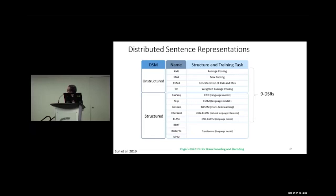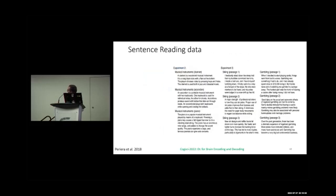They also extended the work by adding BERT representations. The data used was from experiments two and three — passage reading — since experiment one is mainly concept-level. Five subjects read 627 sentences and fMRI was captured.